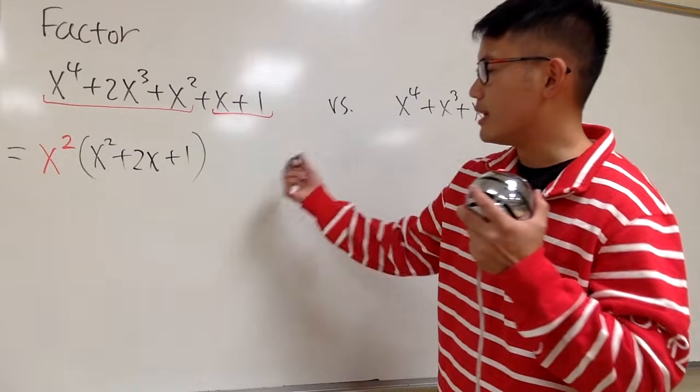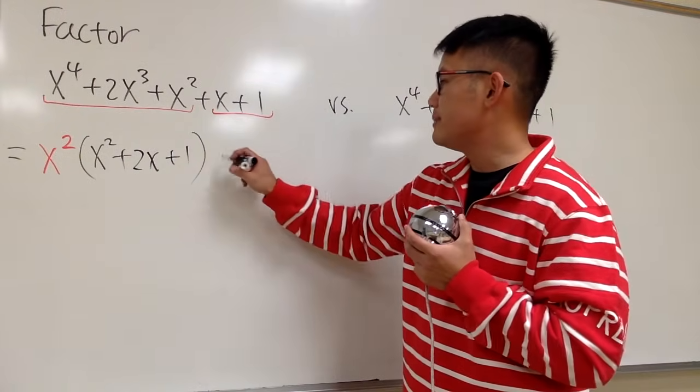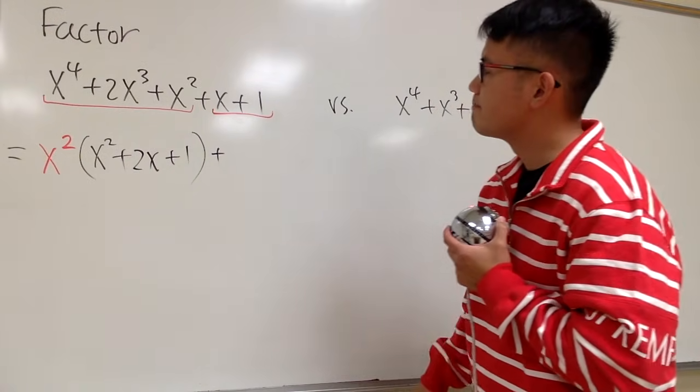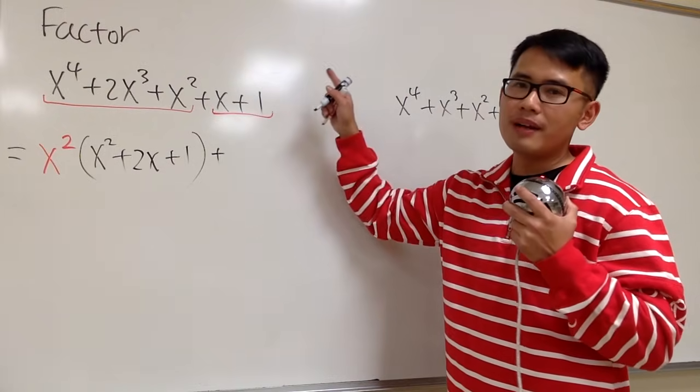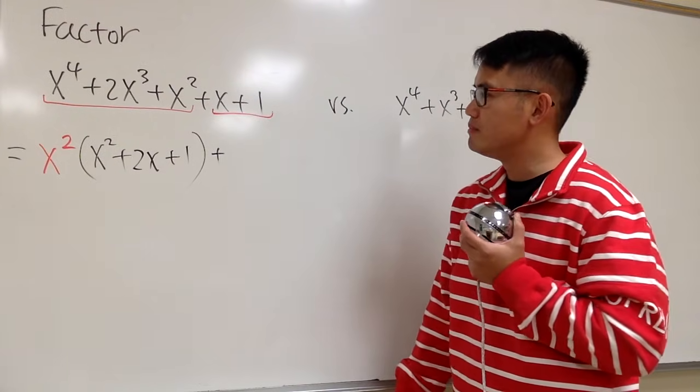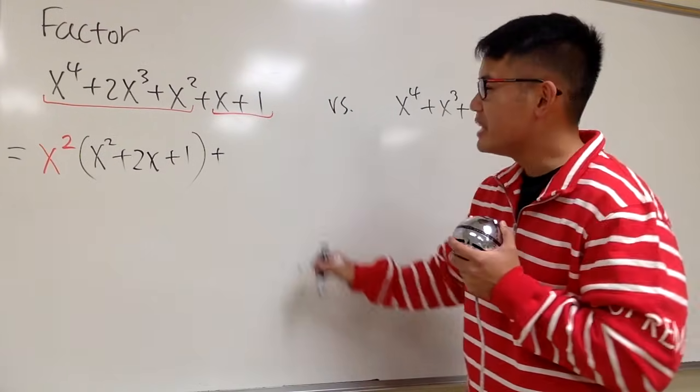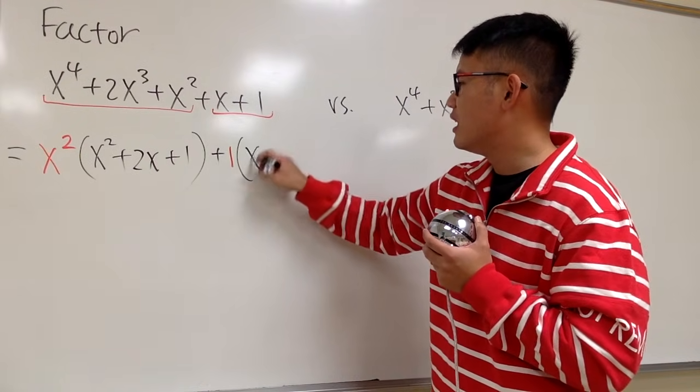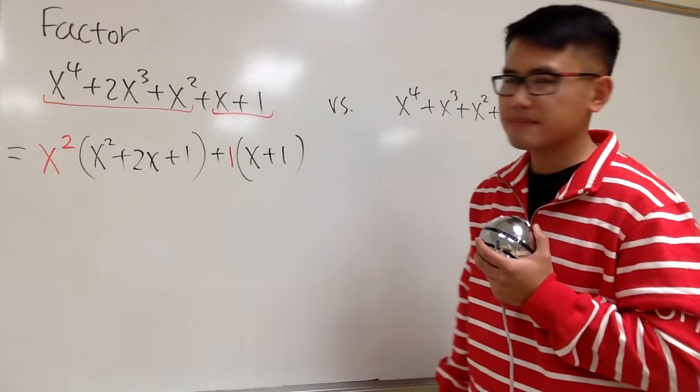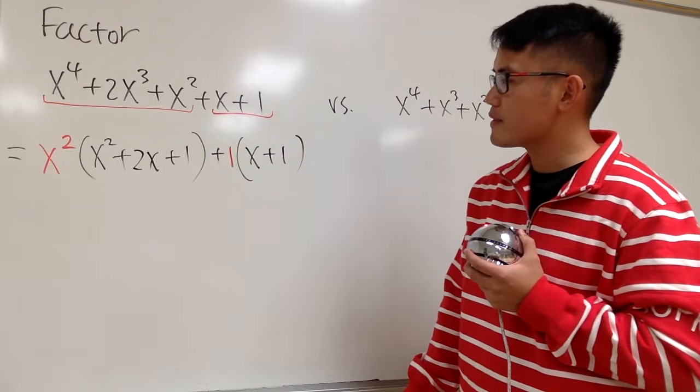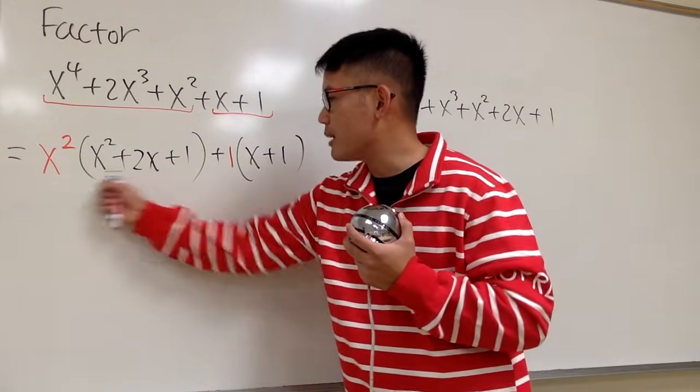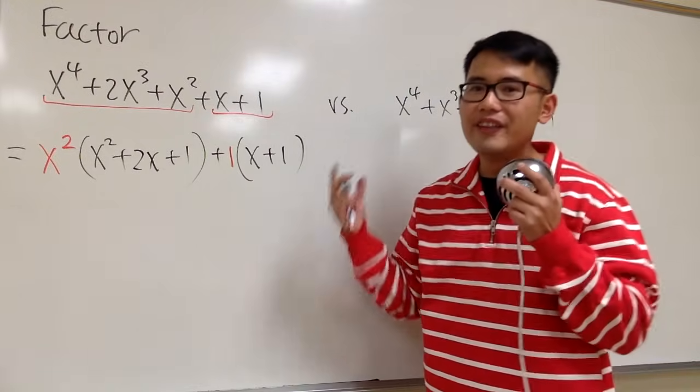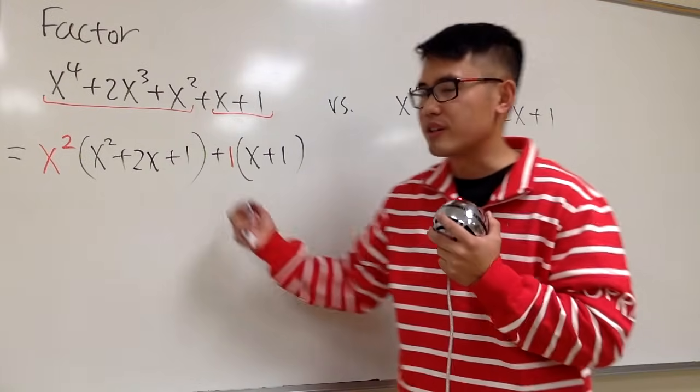So that's the progress. And then let me write down plus x plus 1. What can we factor out? Nothing too much, right? So let me just factor out a 1, and then let me put parentheses around this, x plus 1, like that. Well, this entire parenthesis in black, and this entire parenthesis in black, they are not the same, so we cannot factor things out yet.